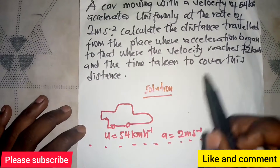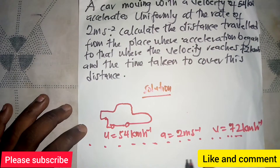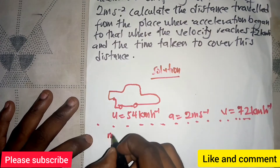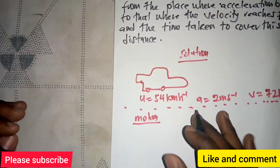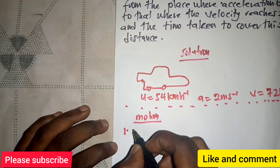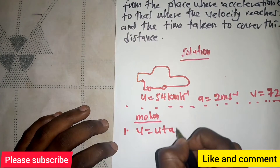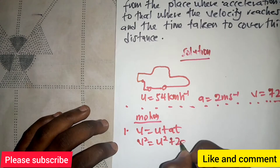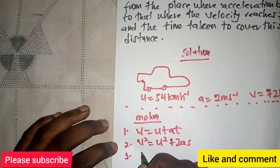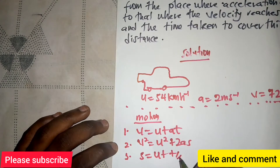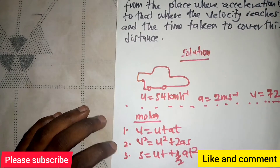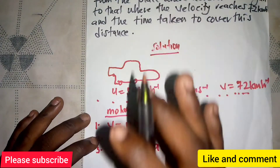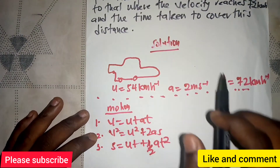So we have all our parameters available. Now we know that for motion, the three equations of motion are: the first equation being v = u + at; the second being v² = u² + 2as; and the third being s = ut + ½at². We are going to use these formulas to calculate what we need.